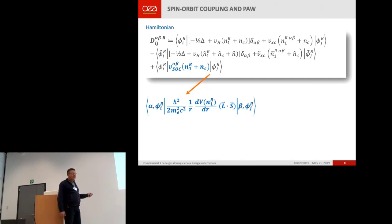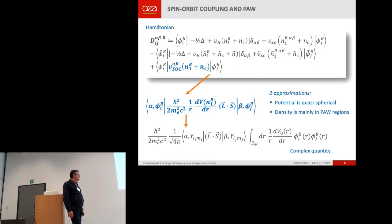And this Hamiltonian has been shown by Niels this morning. This is the spin-orbit Hamiltonian. You can make some assumptions to reduce the complexity of the calculation.